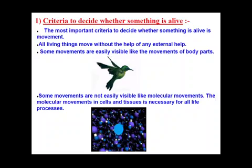Out of these movements, some can be very clearly seen with our eyes, like the movement of a bird. But there are certain other movements which are molecular movements, not easily visible with our naked eyes, like the blood flowing in our veins and the movement of molecules in our cells and tissues.